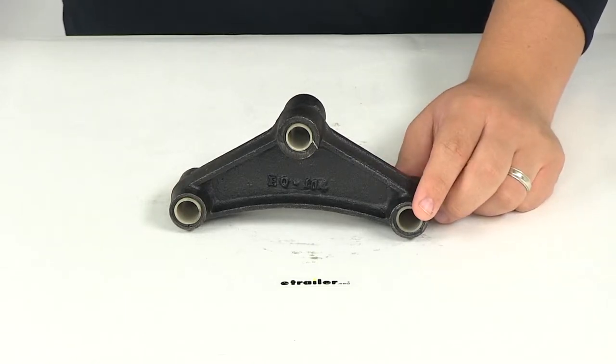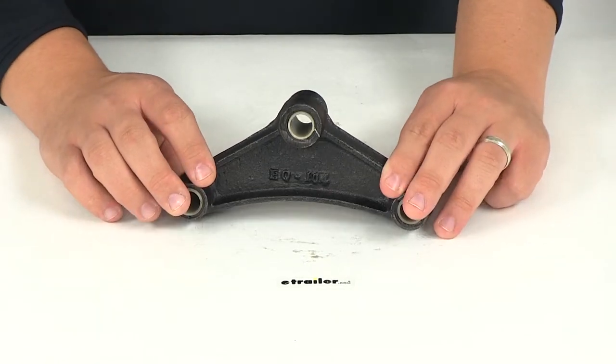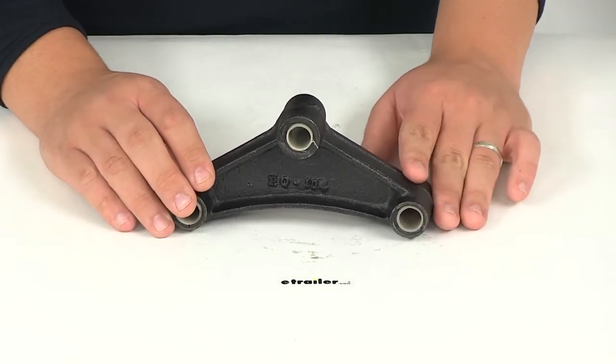Today we'll be reviewing part number TREQ104. This is the TruRide Curved Equalizer for one and three quarter inch wide double I springs.